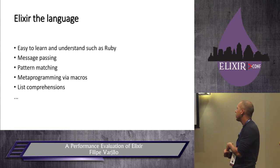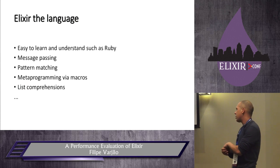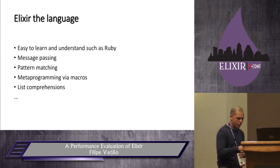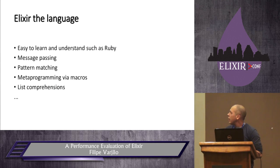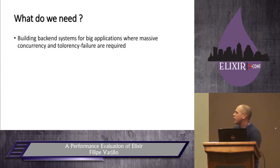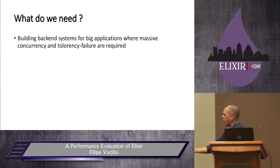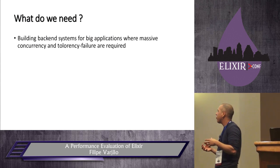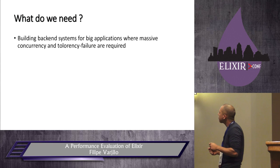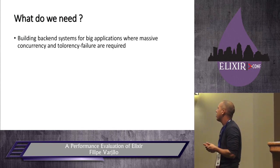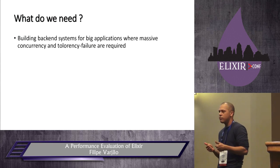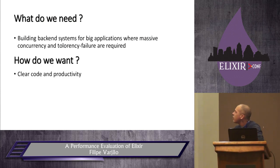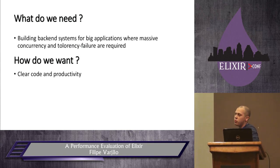Elixir is very easy to learn and understand — somewhat like Ruby. It uses message passing, not shared memory. It has pattern matching and metaprogramming via macros, and list comprehensions. What we need now is to build a back-end system for big applications where massive concurrency and fault tolerance are required.